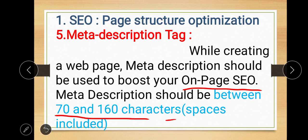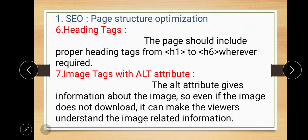The next recommendation is the heading tag. The page should include proper heading tags from H1 to H6 whenever required. Whenever you want to give a heading to any content, you should use heading tags. H1 to H6 tags should be used and according to the level you need — H1, H3, H5 — you can add accordingly. Basically, there are six levels of heading tags, where H1 is the highest level heading and H6 is the lowest level heading tag.